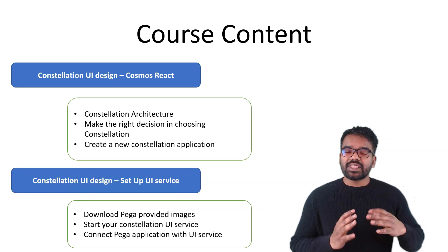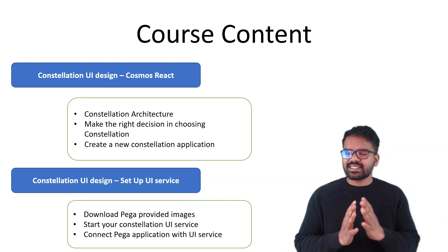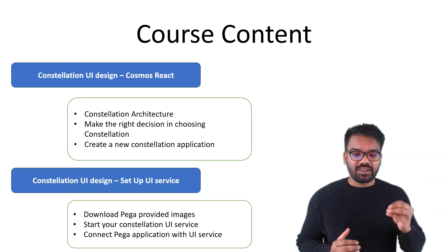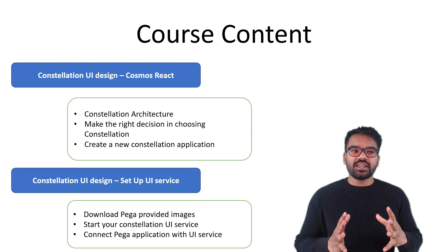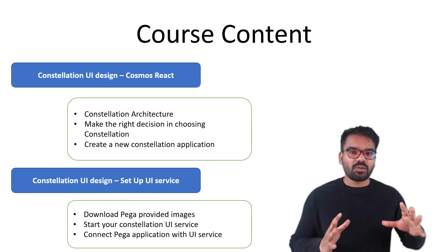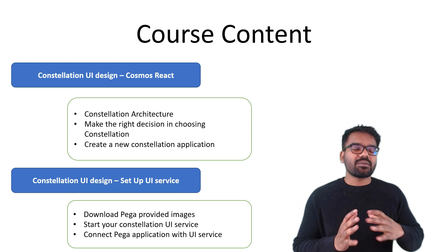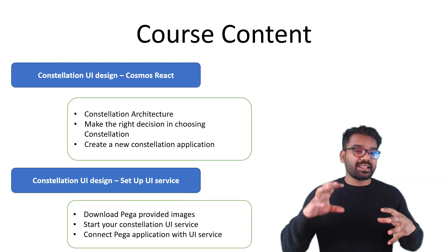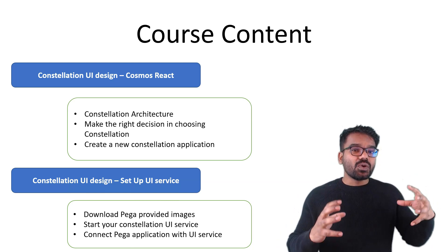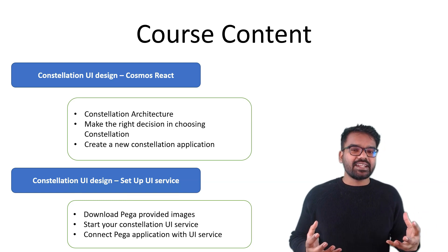Once we set the base and know how JavaScript works, we enter into constellation. We first understand the architecture behind constellation, as a lot of UI components were offloaded from Pega's rule base. We also see if constellation can be a real fit. Then we start by creating our first brand new constellation application. And then an interesting lecture covers what happens at the back end — for constellation UI to work, you need a separate server, the Constellation UI server, or a CDN server. I will explain how to set this up using a Docker container, step by step in your personal edition, and then connect the Pega application to the constellation UI service, understanding how assets are loaded.